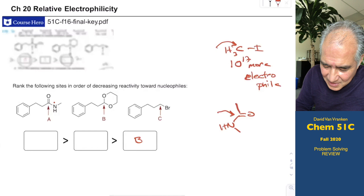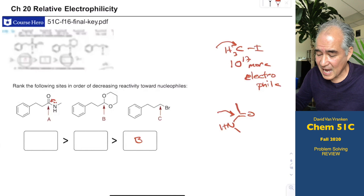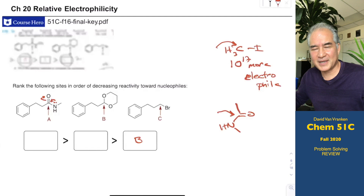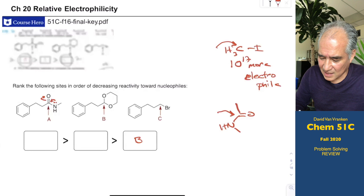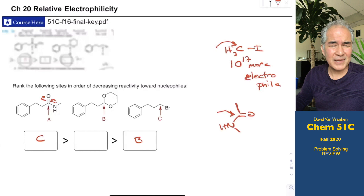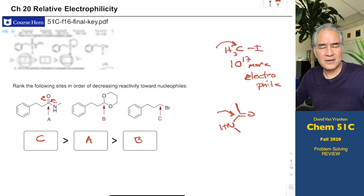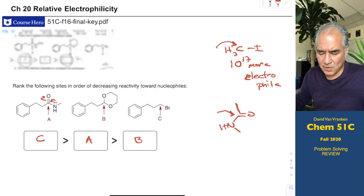Carbonyls generally are much more well-behaved than alkyl bromides, but that doesn't mean they're always more reactive. The real reason we don't like alkyl bromides is competing E2 elimination reactions. Based on what I know, compound C (the alkyl halide) should be substantially more reactive than the amide. The correct order is: alkyl halide most reactive, then amide, then the acetal which is completely unreactive.